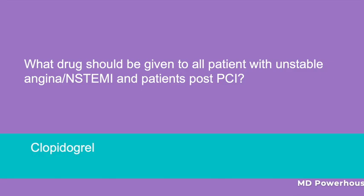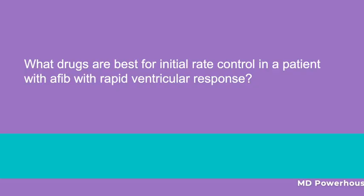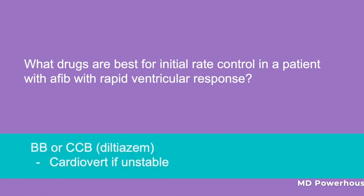What drugs are best for initial rate control in a patient with atrial fibrillation with rapid ventricular response? Beta-blockers or calcium channel blockers. If the patient is unstable, then you cardiovert.